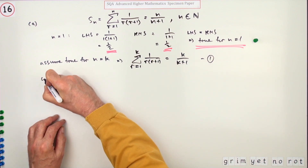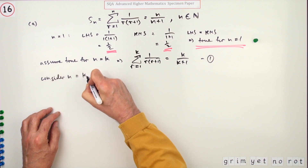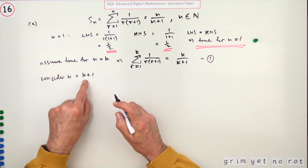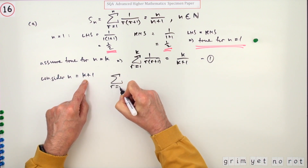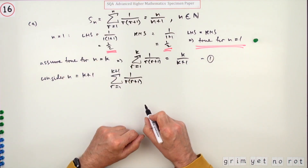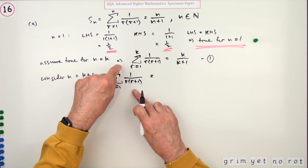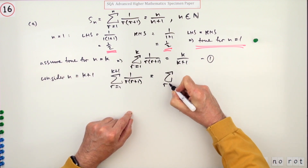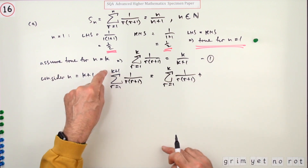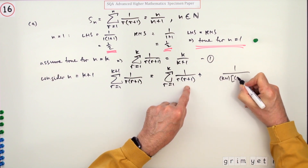That's not worth a mark on its own; the next mark comes in conjunction with then considering what happens for n equals k+1. You can't say 'prove true for n equals k+1' — you're just considering it. When n is k+1, the expression reads: sum from r equals 1 to k+1 of the general term. You now consider what this could equal — that's just the sum of the first k terms plus one more term, the term at k+1, which is 1 over (k+1)(k+2).